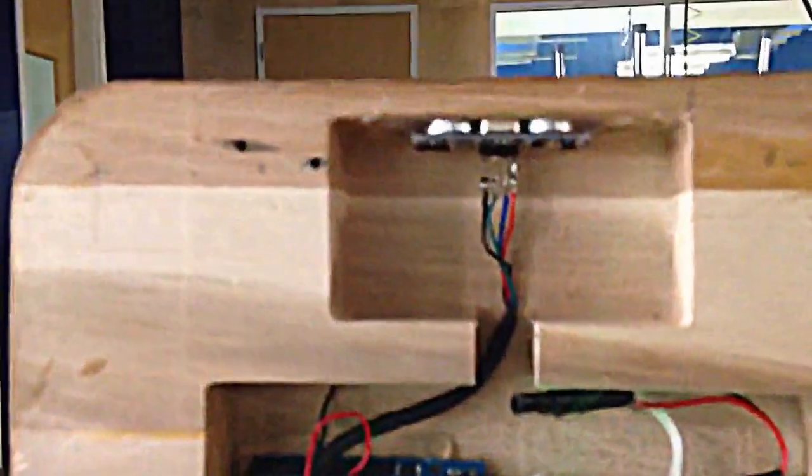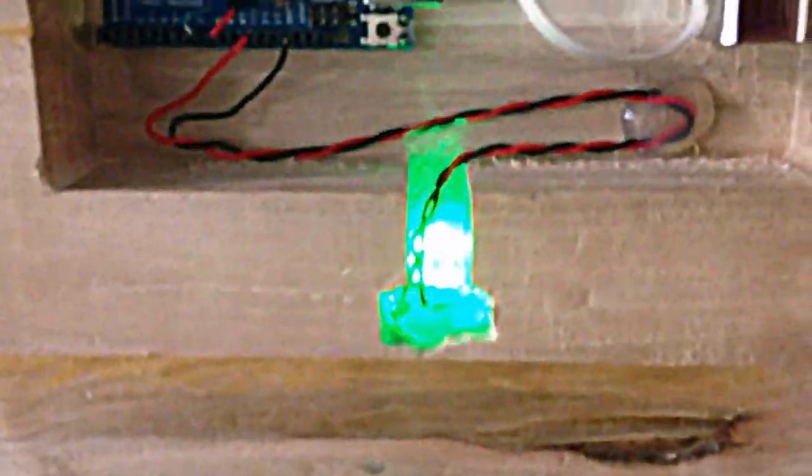You can see the ultrasonic sensor up here, wired down into the Arduino Uno down here. Then we have our four blinking LEDs, soldered together in parallel, and a 9-volt battery powers it all.